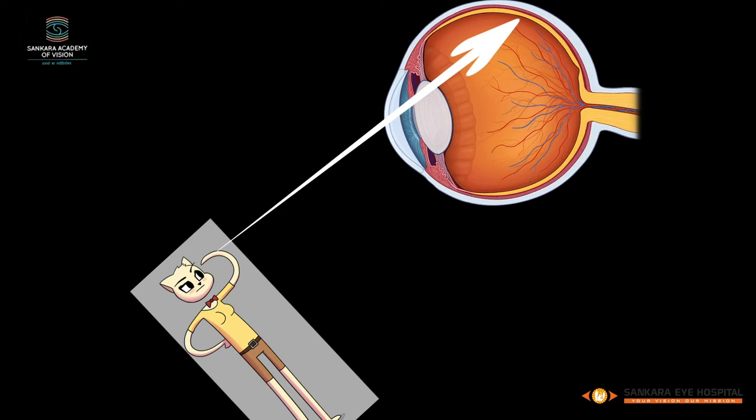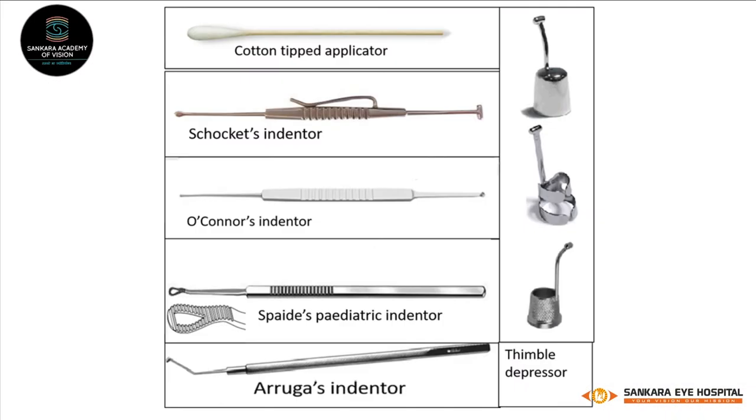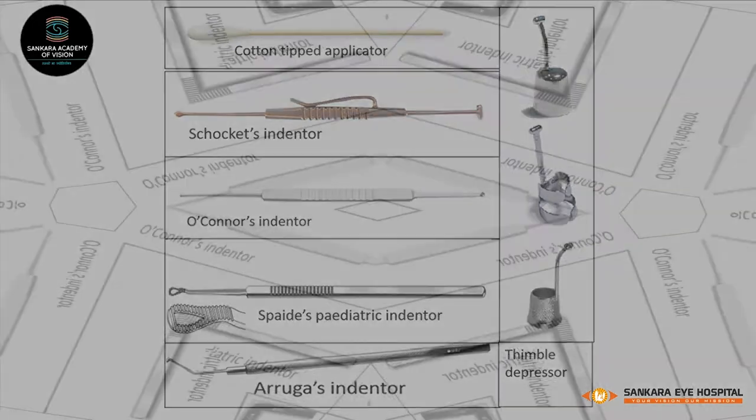Cotton tip applicators or specialized metallic instruments with various designs are used for this purpose. The thimble depressor is a commonly used depressor for scleral indentation.